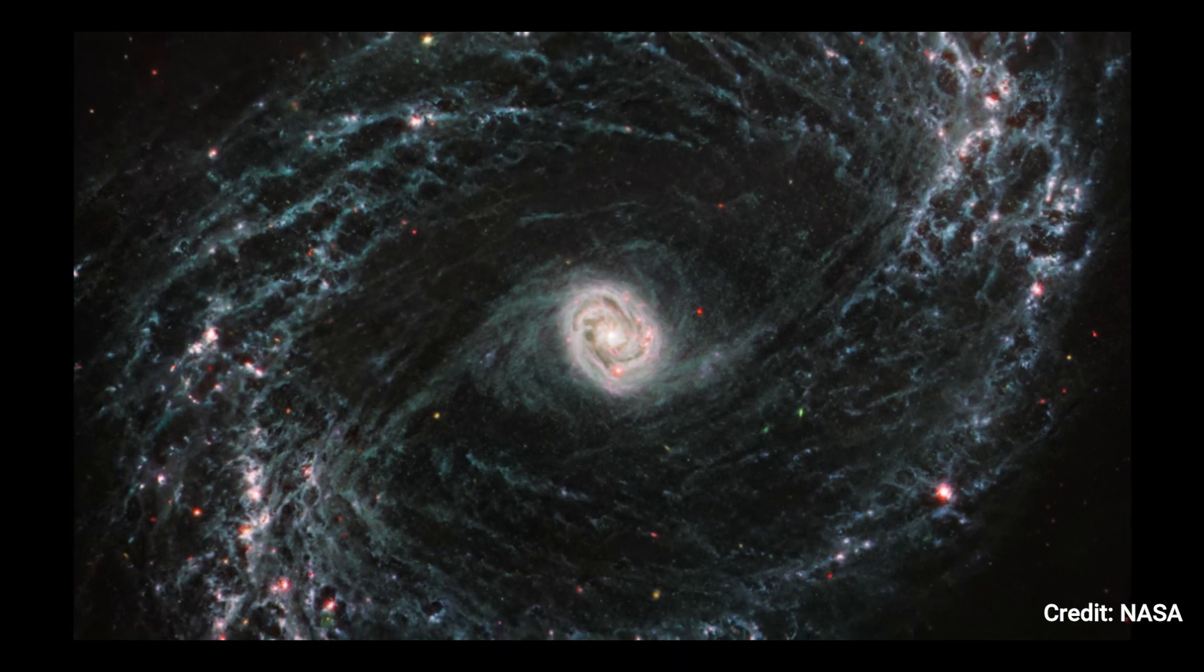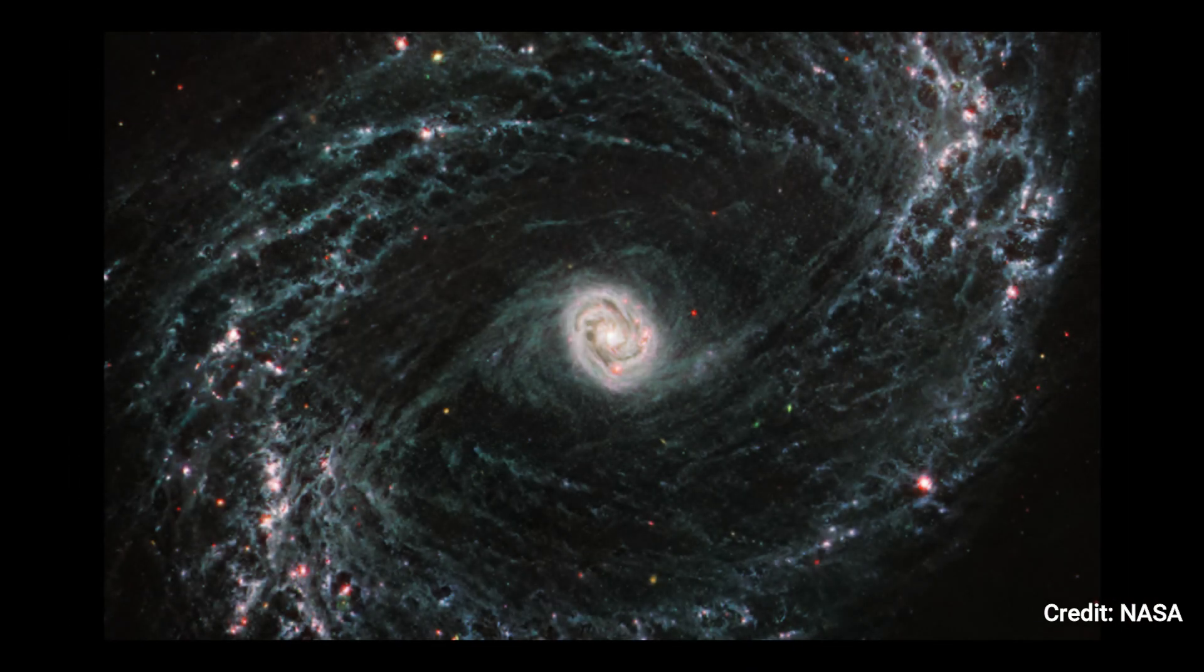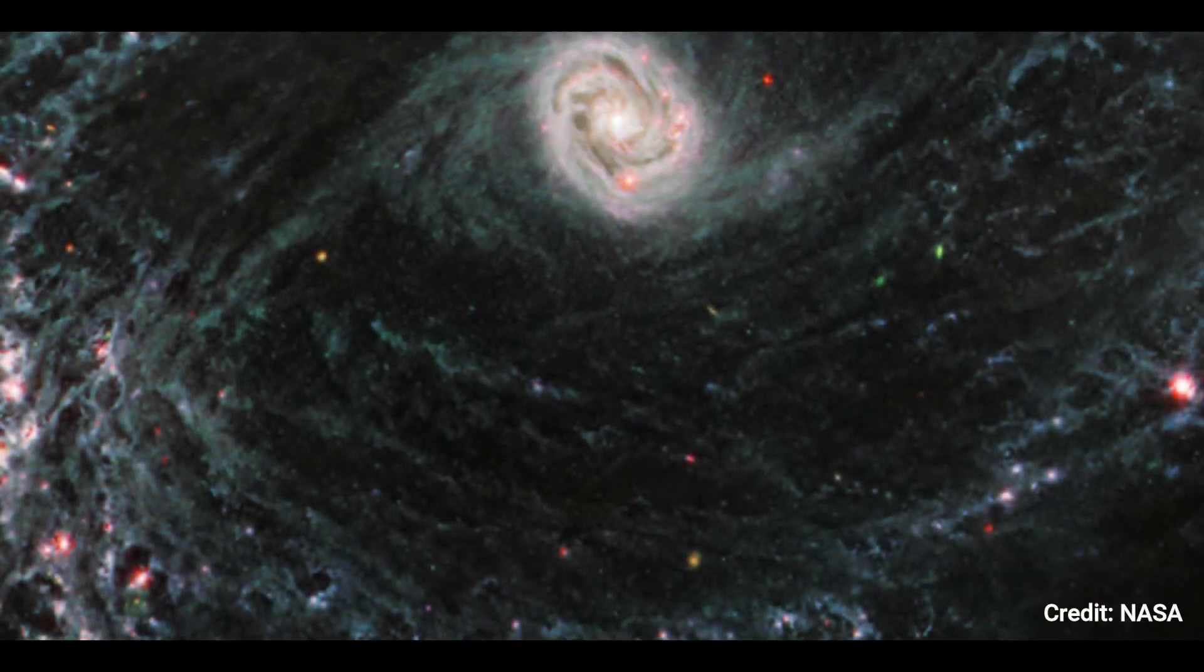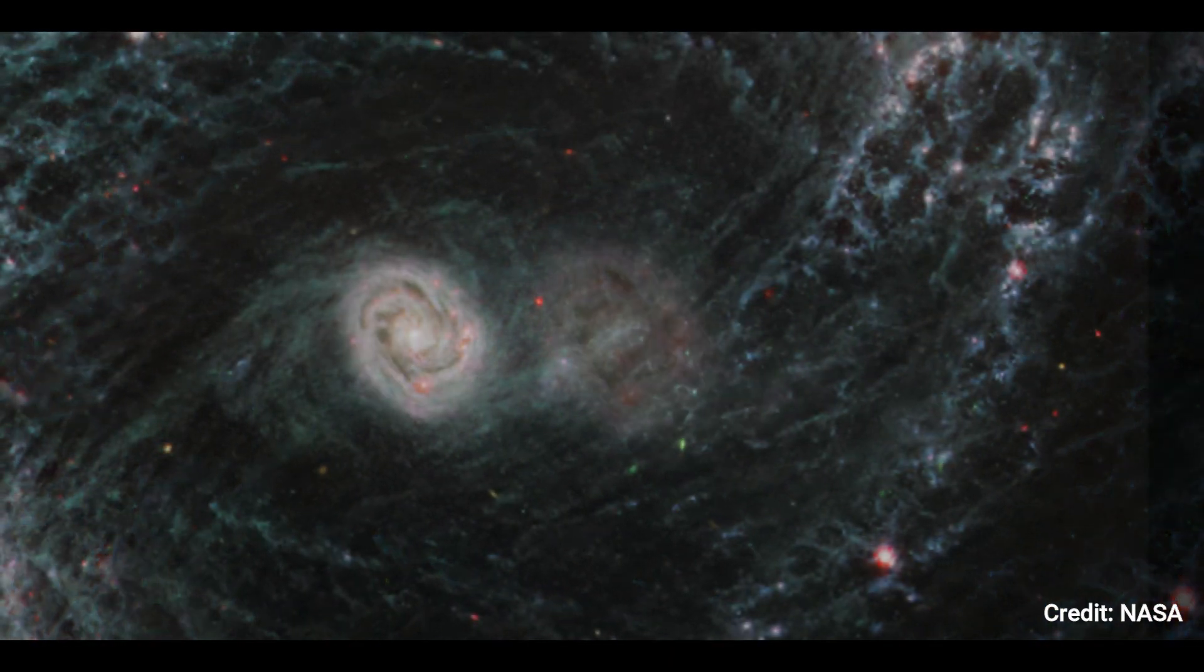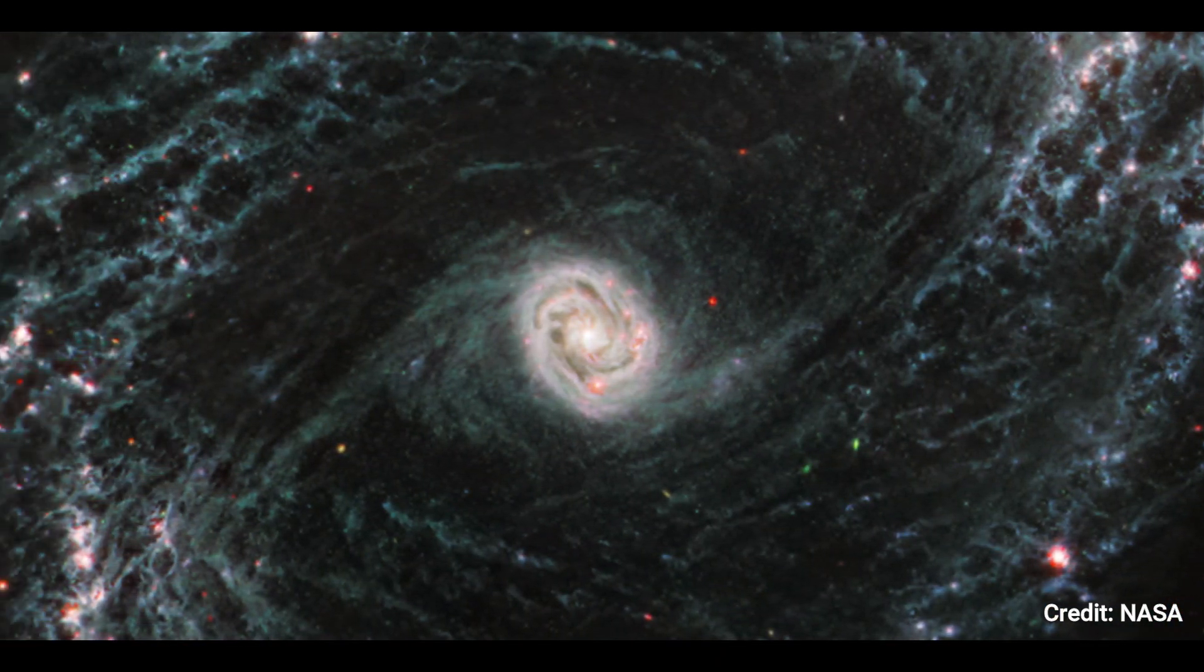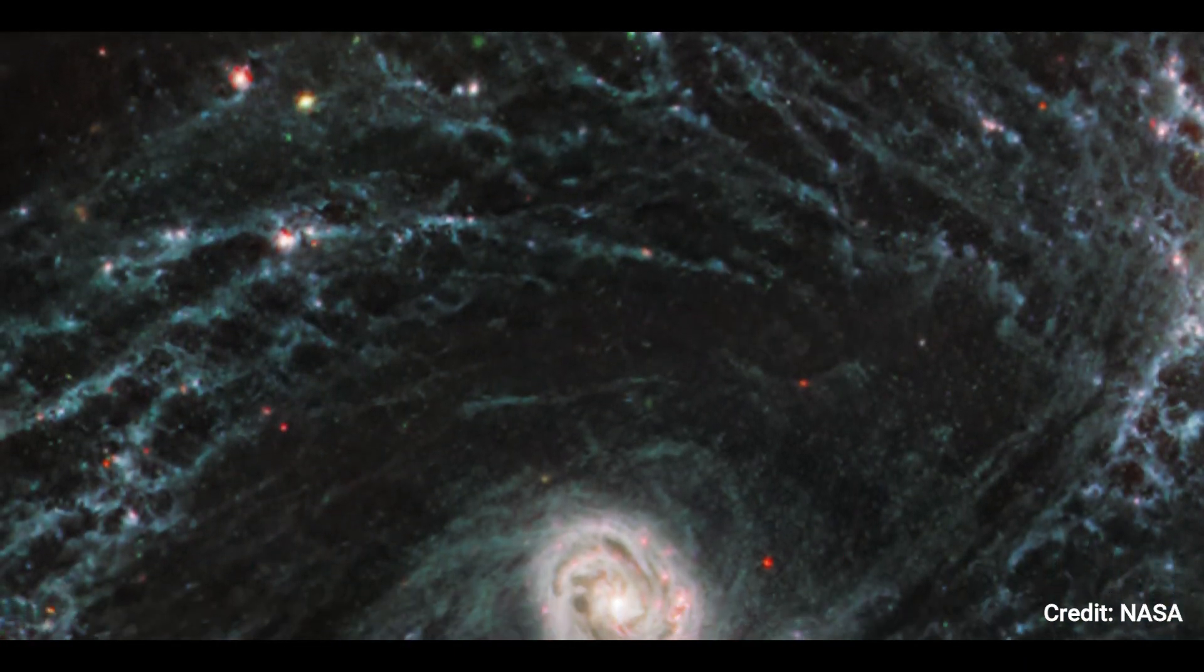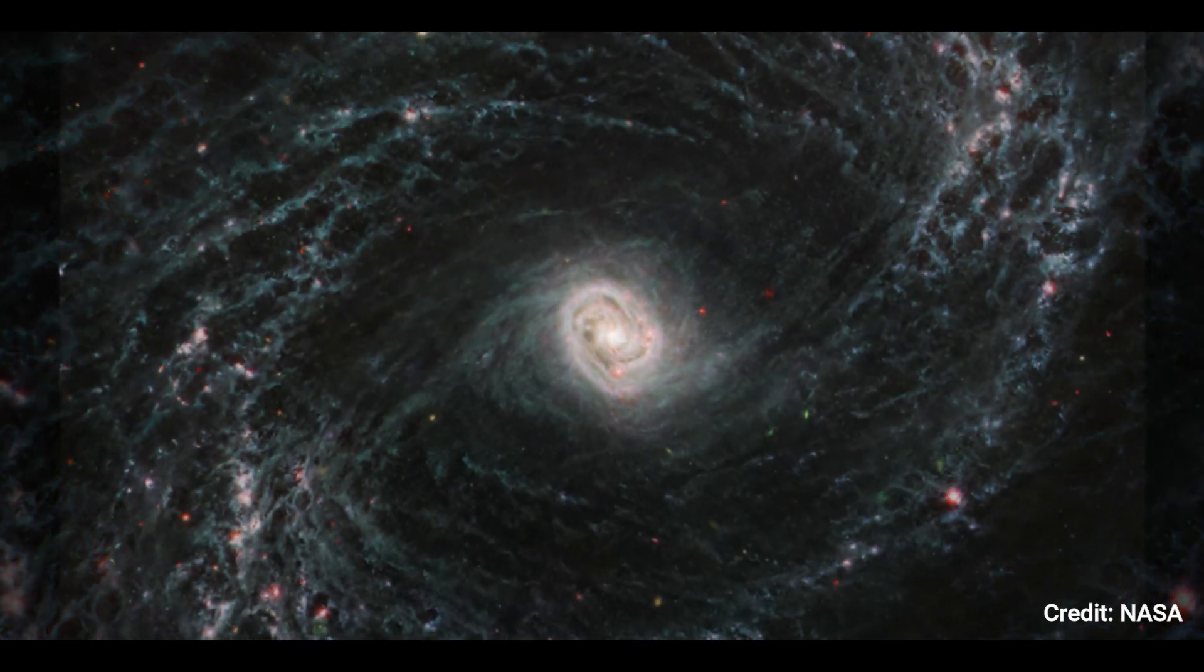Webb's infrared eye illuminates areas that appear dark and dim in optical imaging. This is caused by clumps of dust and gas in the interstellar medium absorbing and radiating infrared light from developing stars. Webb's image of NGC 1433 is a powerful demonstration of how dynamic processes involved with star formation influence the overall structure of a galaxy.